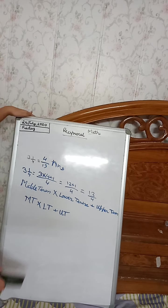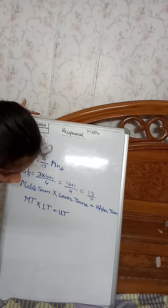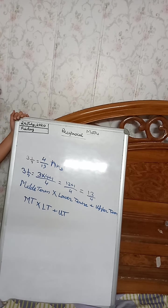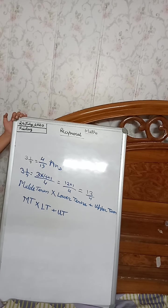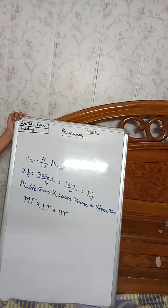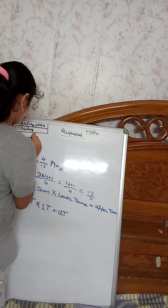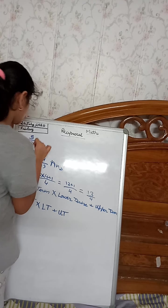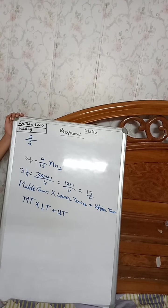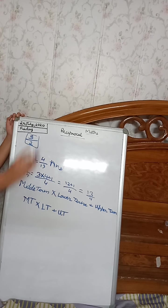Like this only, we have to convert a simple improper fraction. My simple improper fraction will be 5 by 2. So in this, what do we have to do? We have to just switch it.